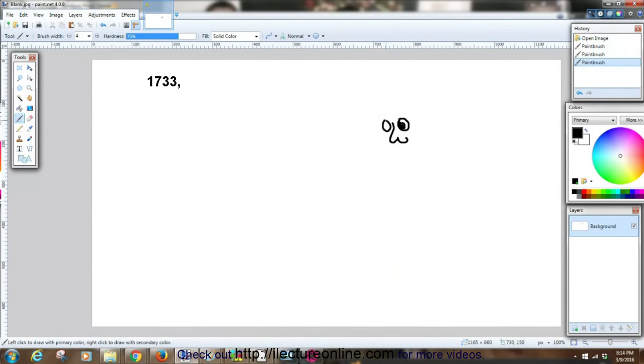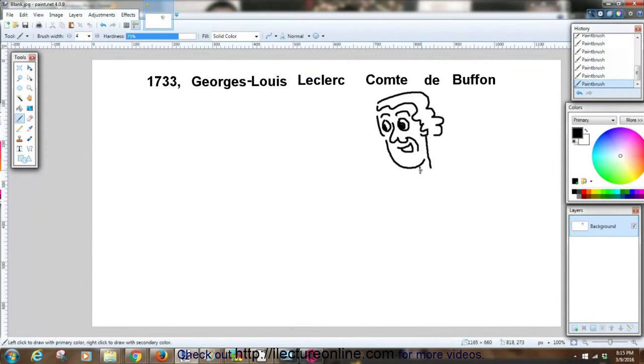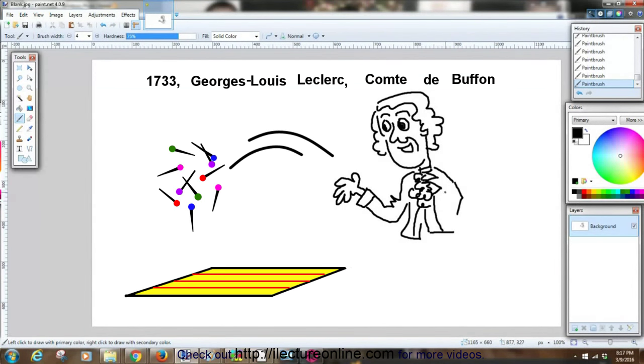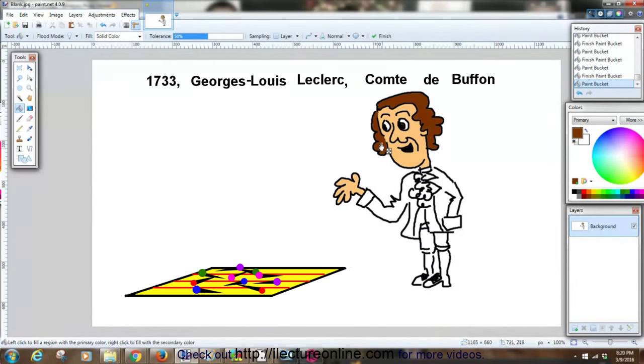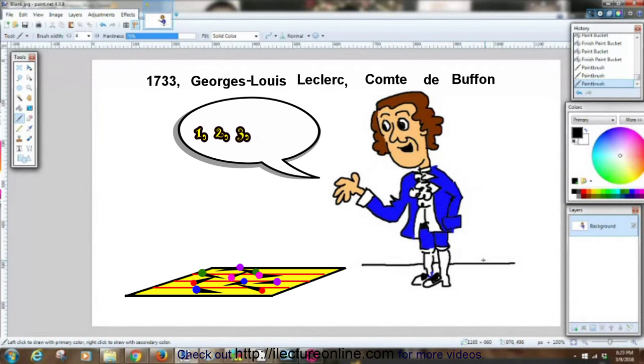All the way back in 1733, Comte de Buffon, also known as Georges-Louis Leclerc Comte de Buffon, came up with a method in which he said that if you drop a bunch of needles on a piece of paper or a floor that has lines on it, we can actually calculate the number pi by figuring out how many of the needles actually hit one of the lines.